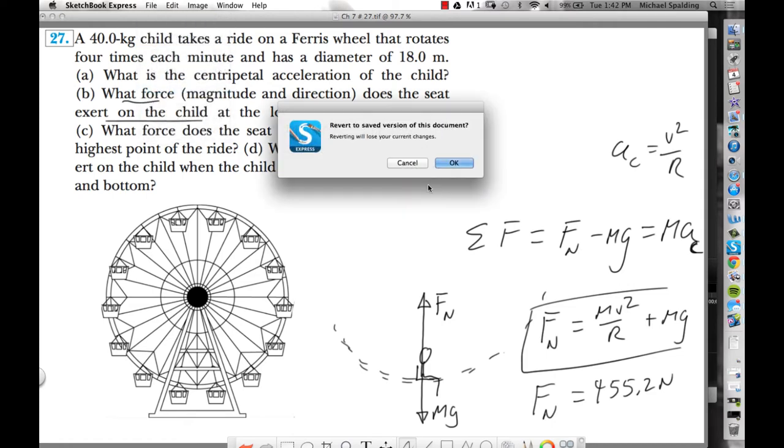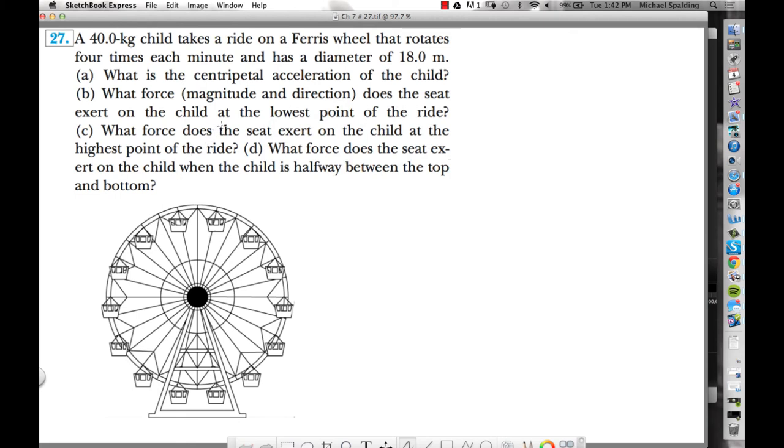Part C. Now we're focusing at the top of the circle. The kid is up here. Here's the seat. The kid is sitting on the seat. So we got mg down. I know that art is horrible. That's really bad. Try that again. The kid is sitting here on the seat. Mg down, normal force up. Center of the circle is down here. Why is the center important?